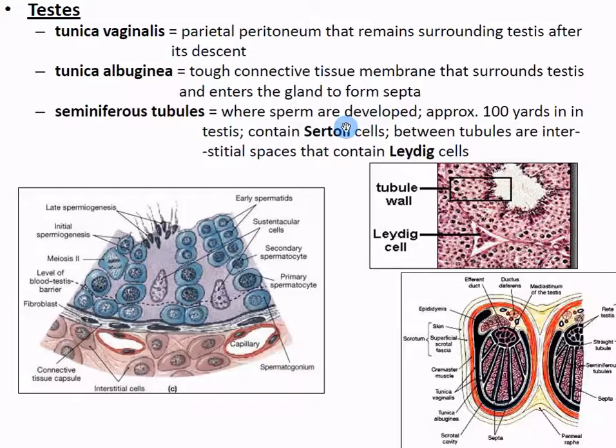Sertoli cells are stimulated by FSH (follicle stimulating hormone) to develop sperm. The Leydig cells are stimulated by LH and are there to develop testosterone. FSH and testosterone work together synergistically to increase sperm production. If somebody has decreased testosterone they can still make sperm, just not as much. But if you lose FSH, you lose the ability to make sperm entirely. So if someone has a prolactinoma that stops FSH, that person is actually infertile.